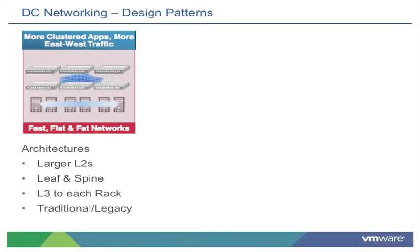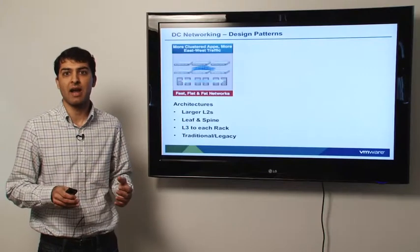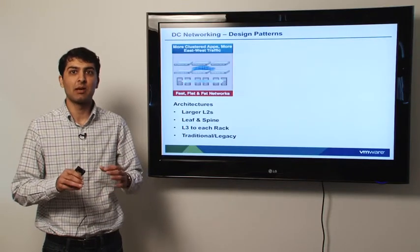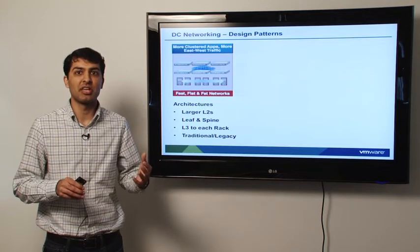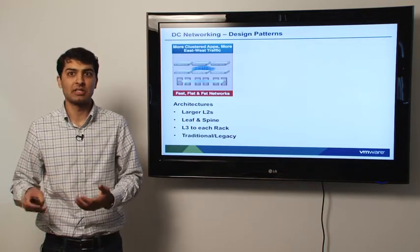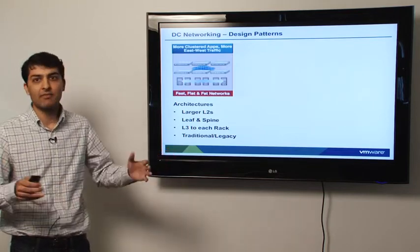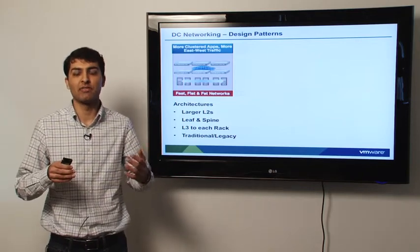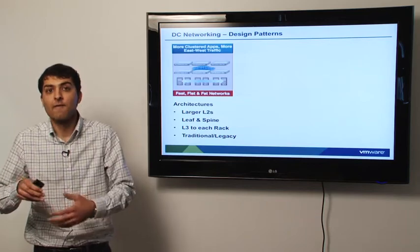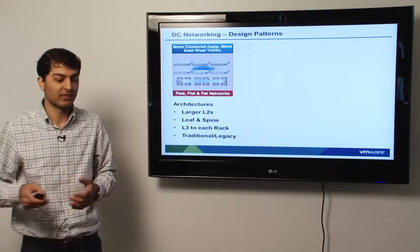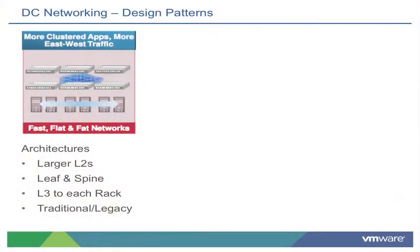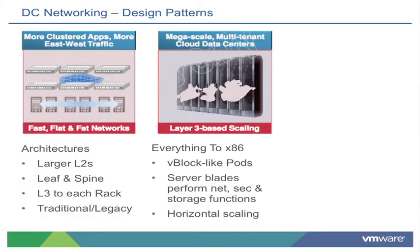What do we see in data center design patterns out in the industry today? We're seeing a trend towards fast, flat, fat L2 networks — larger L2s, leaf and spine networks, and L3 to the rack. The reason for this is to decouple physical infrastructure network changes from what an operational admin would need to do day-to-day as VM workloads spin up and spin down. This blends traditional networking and security views with new advanced virtualized views at the cutting edge of the data center world.